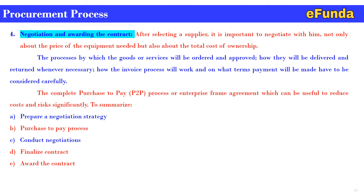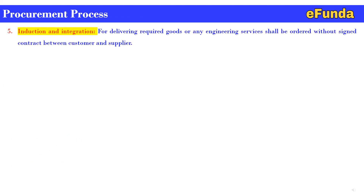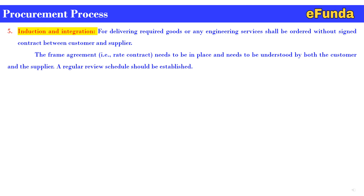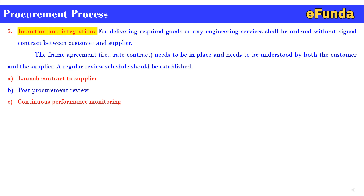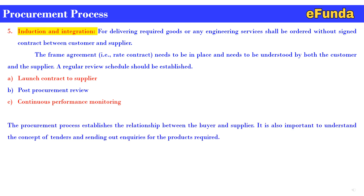Fifth: induction and integration. No goods or engineering services shall be ordered without a signed contract between customer and supplier. The frame agreement, that is a rate contract, needs to be in place and understood by both the customer and the supplier. A regular review schedule should be established with: A. launch contract to supplier, B. post-procurement review, C. continuous performance monitoring. The procurement process establishes the relationship between the buyer and supplier.